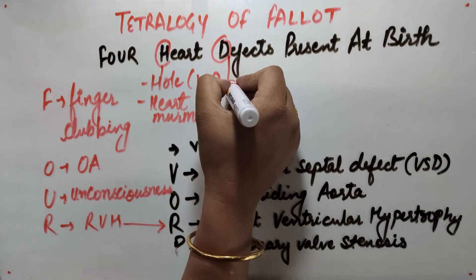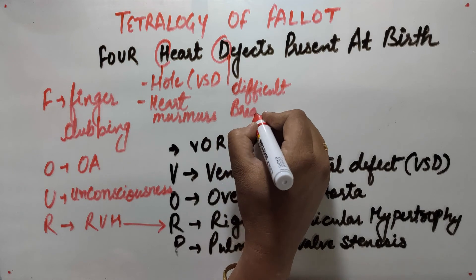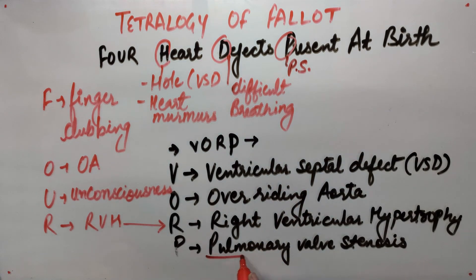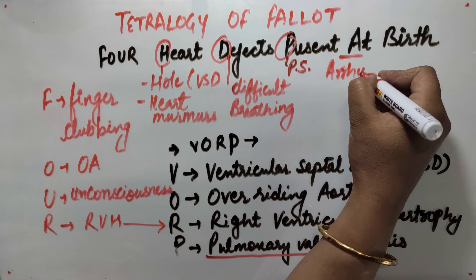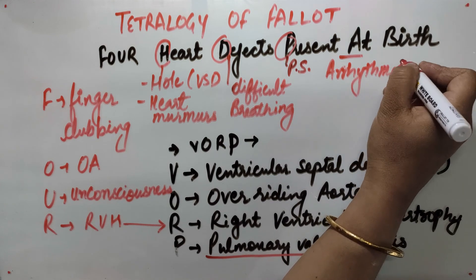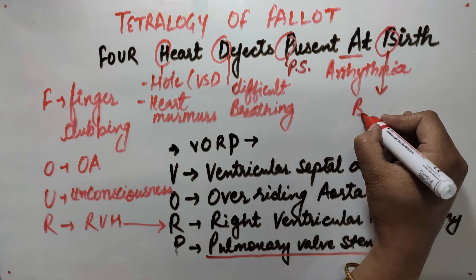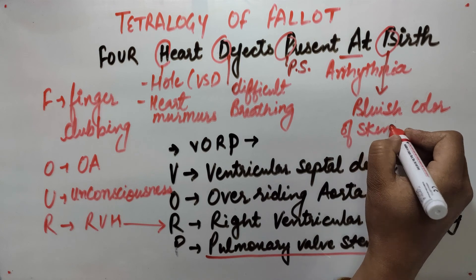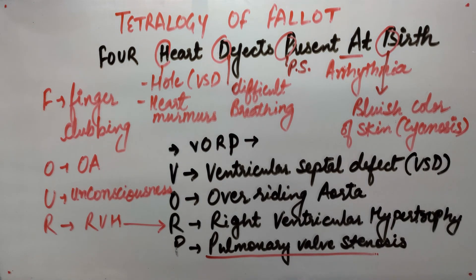D stands for difficulty in breathing. P is pulmonary stenosis. A stands for arrhythmia, that is irregular heart rate. B stands for bluish colour of skin, which is also called cyanosis. It is seen during episodes of crying or when the infant tries to pass stool.